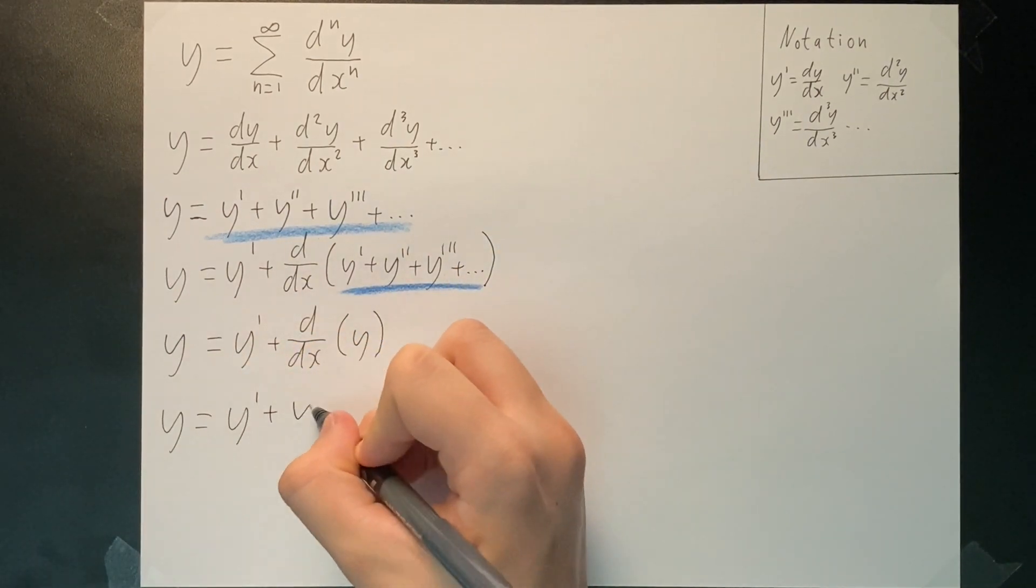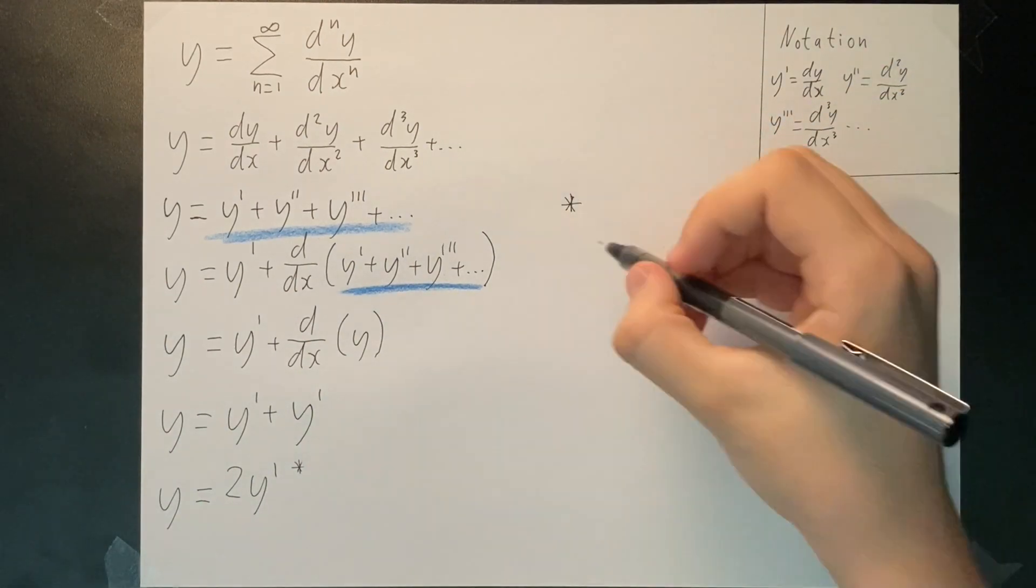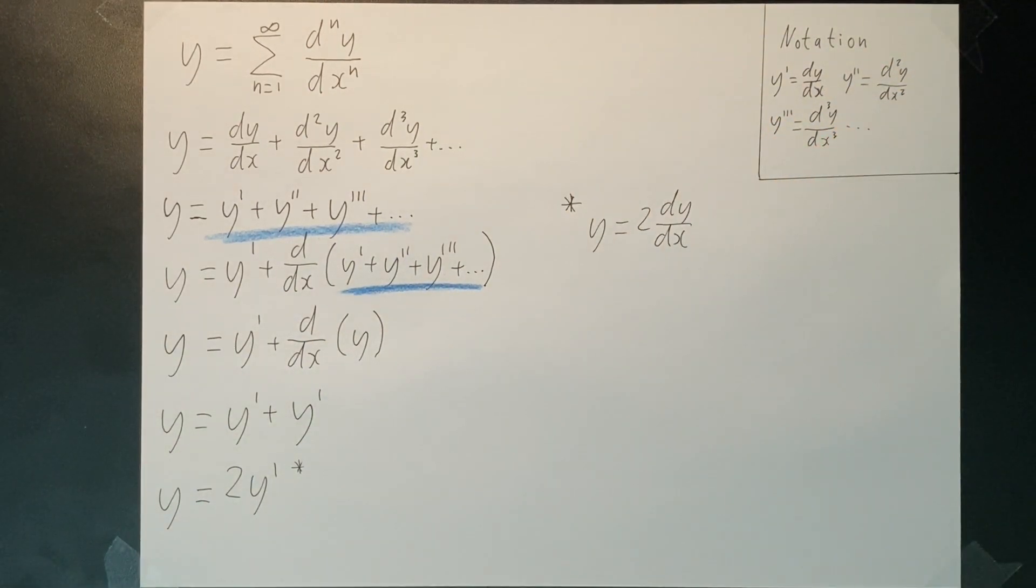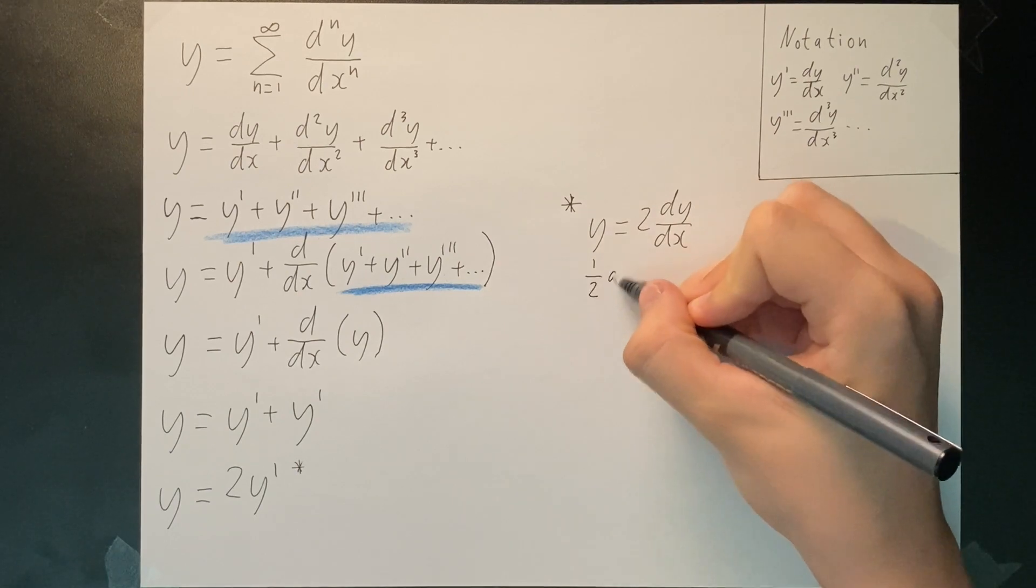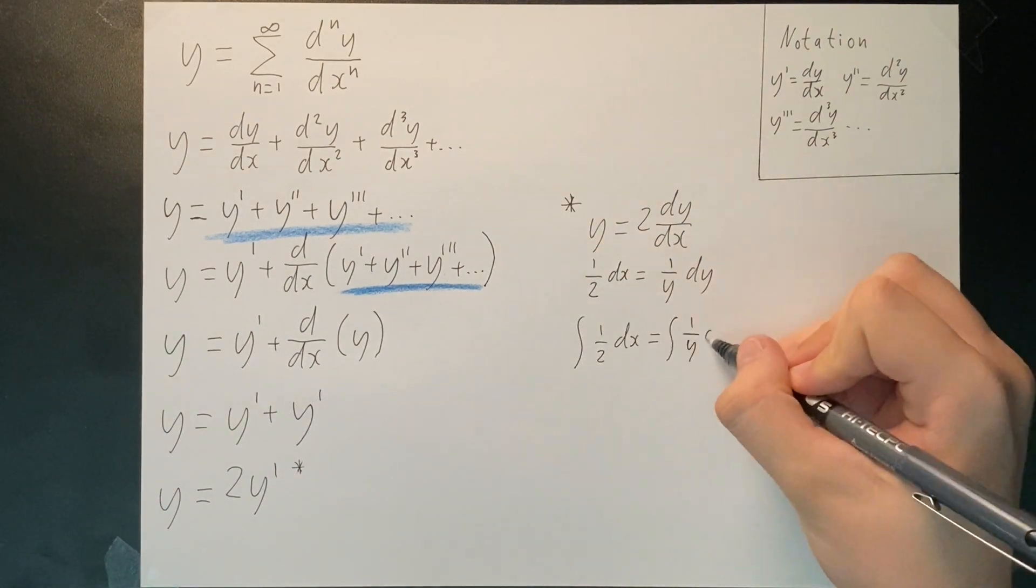We can resolve the derivative and combine like terms to make a separable first order equation. Let's resubstitute our dy dx for y prime. We can divide the 2 over, divide the y over, and multiply by dx. This allows us to integrate both sides.